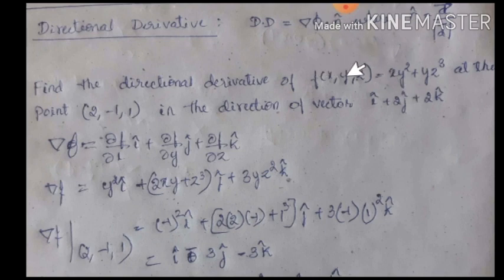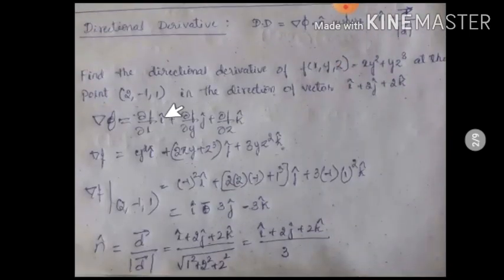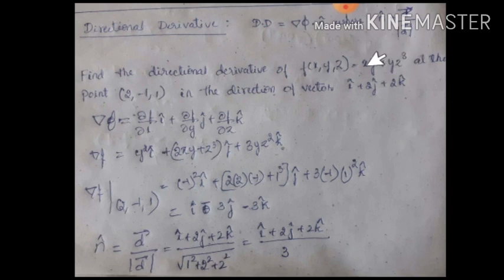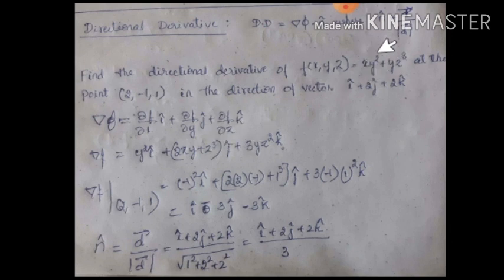Here f is a scalar function. We need to find del f, using the formula: partial f by partial x times i cap, plus partial f by partial y times j cap, plus partial f by partial z times k cap. Differentiating with respect to x: y squared times i cap. With respect to y: derivative of y squared is 2y times x, so 2xy; derivative of y is 1 times z cubed, giving z cubed j cap. With respect to z: no z term gives 0; derivative of z cubed is 3z squared times y, giving 3yz squared k cap.